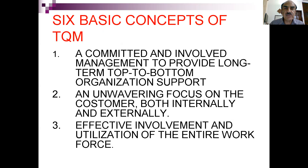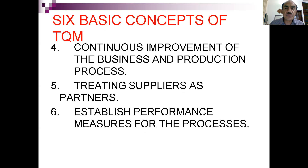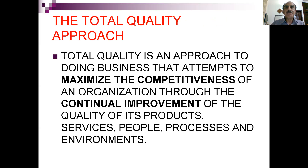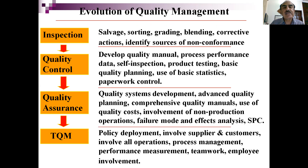The six basic concepts of total quality management are: commitment and involvement, an unwavering focus on the customer, effective involvement of the entire workforce, continuous improvement, treating suppliers as a partner, and establishing performance measures for processes. The total quality approach began in the 1960s–70s when most quality was based on inspection.